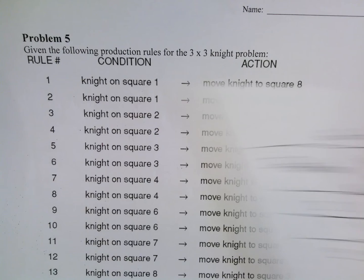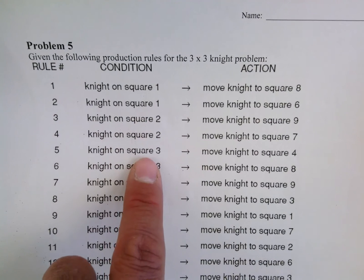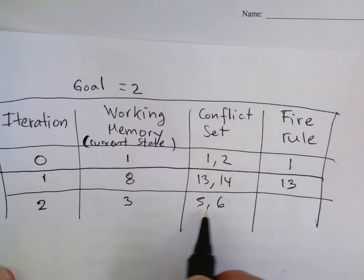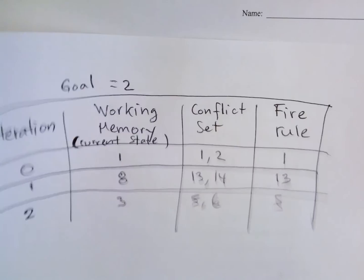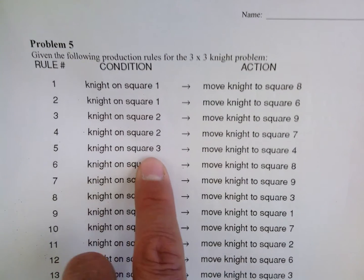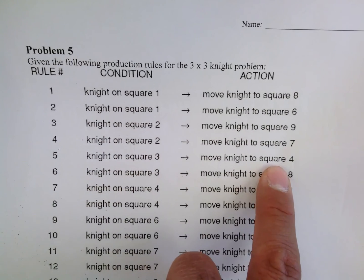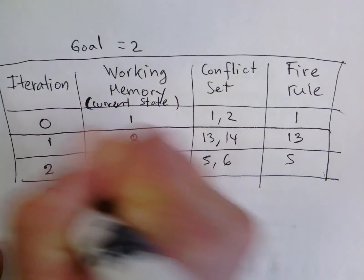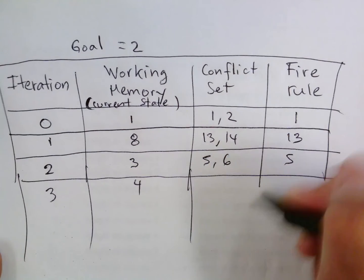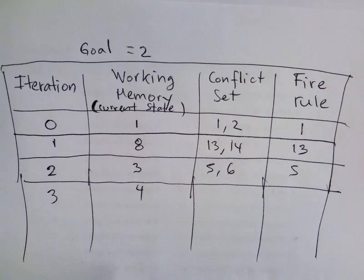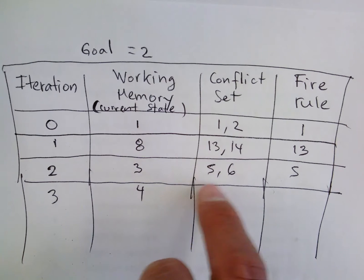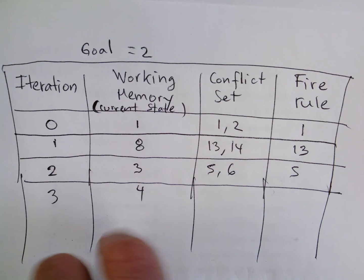Square three matches rules 5 and 6, so the conflict set has rules 5 and 6. We fire rule 5 first, which moves the knight to square four. So after iteration three, we are on square four.